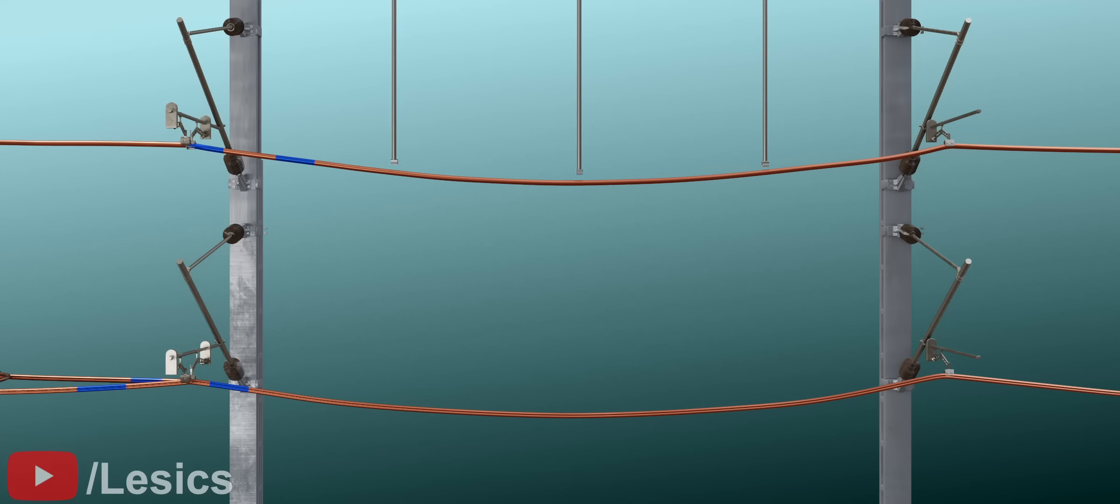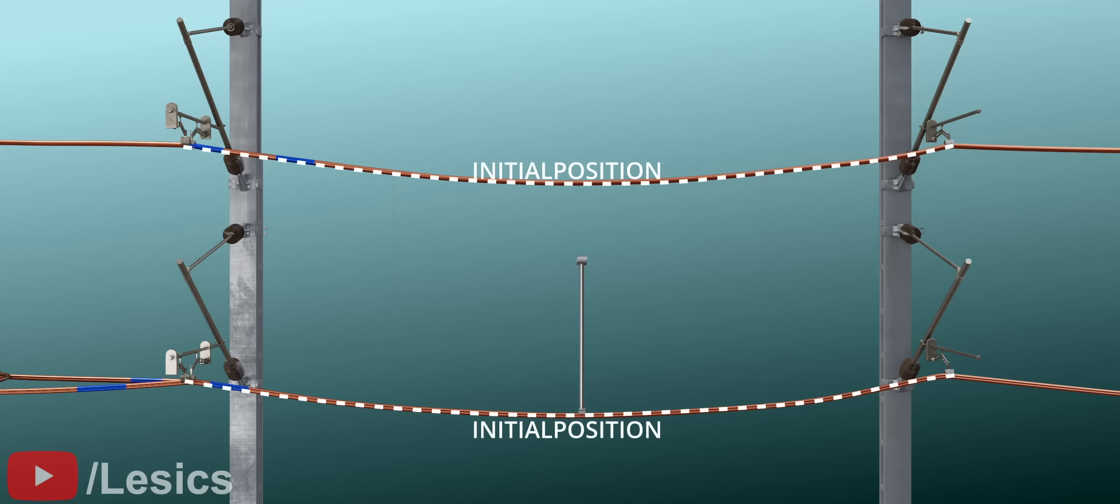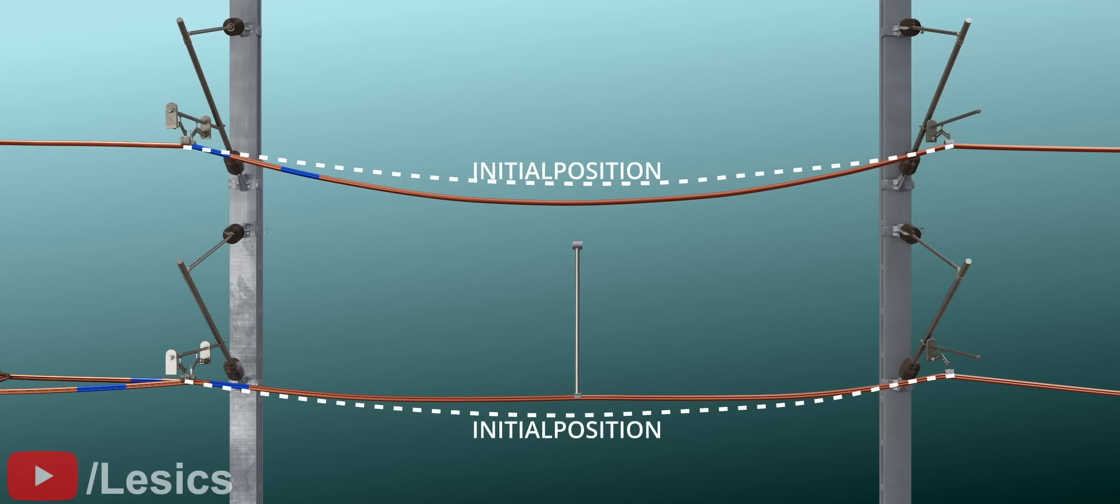If you take a connecting wire called a dropper, which has the same length as the distance between the wires, nothing will happen to their shape. However, what would happen if we connected the wires using a dropper of a shorter length? This shorter dropper will obviously pull the contact wire up, while pulling the upper wire down.